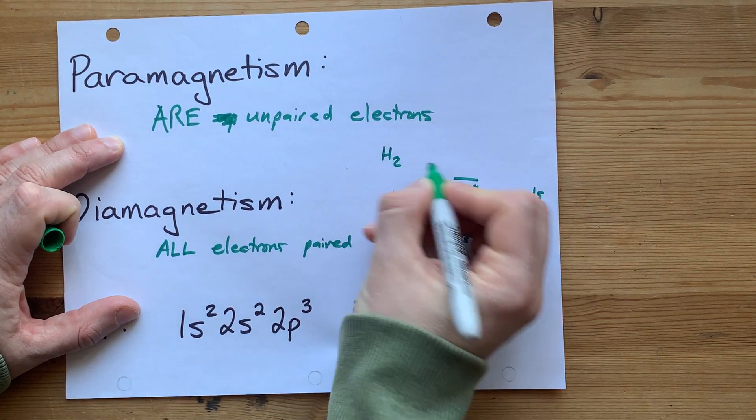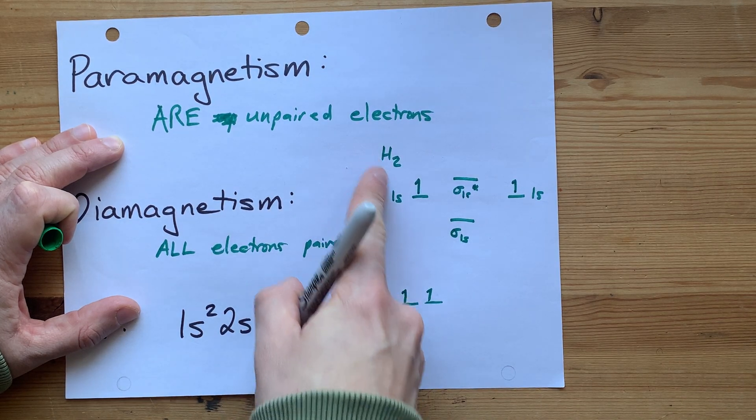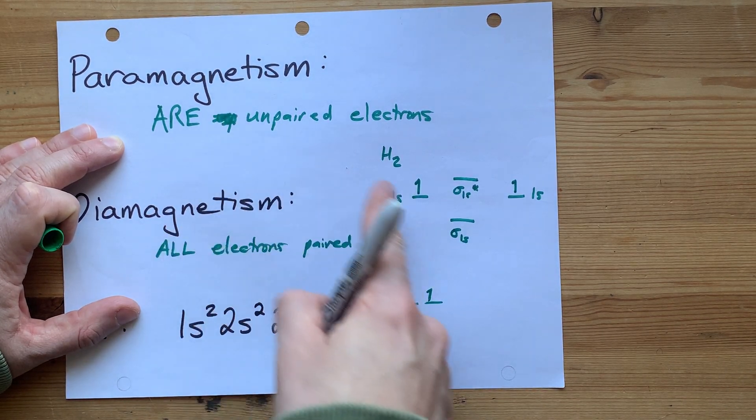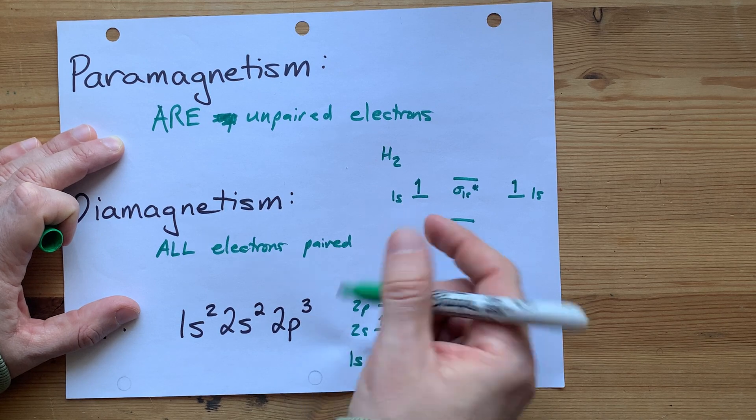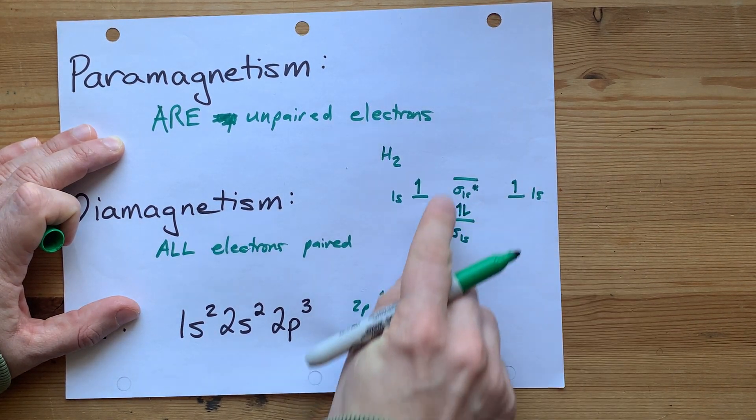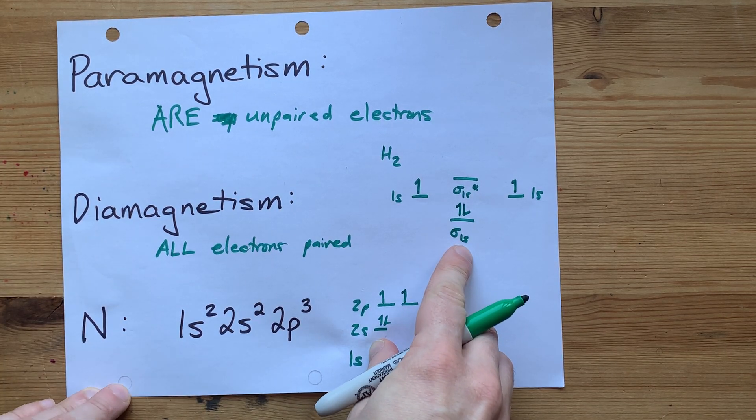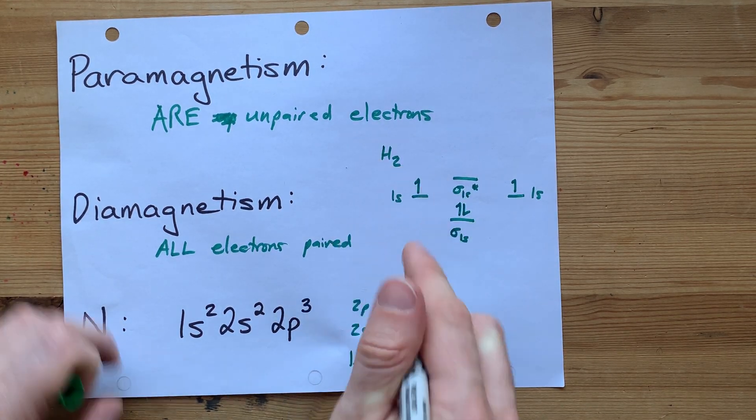H2, well, each H I should say, brings one electron with it. And so each H on its own is paramagnetic. But once the two atoms combine, you're able to put those two electrons into the lowest energy molecular orbital, the sigma 1s. And so in H2, the molecular orbitals...